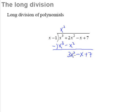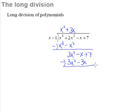Something multiplied by x must give me 3x squared, so that something must be positive 3x. Then 3x multiplied by negative 1 gives negative 3x. We subtract again — 3x squared minus 3x squared gives zero. Then negative x minus negative 3x: the negative-negative makes a positive, so positive 3x minus x gives 2x.